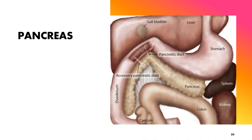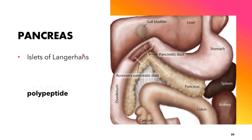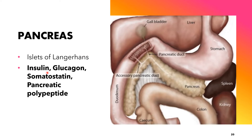The pancreas also functions as an endocrine gland. The regions of the pancreas that contain hormone-producing cells are known as the islets of Langerhans, or pancreatic islets. The endocrine pancreas is responsible for the production of insulin, glucagon, somatostatin, and pancreatic polypeptide. These are classified as protein hormones.